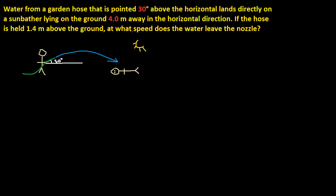So what it's asking is: at what speed does the water leave the nozzle? It's asking for V0. This is V0, and this is 30 degrees.